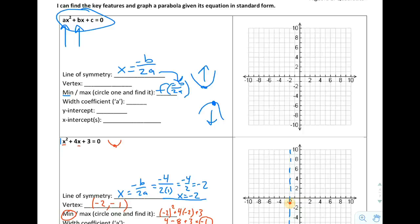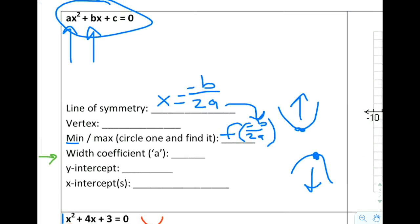Let's continue to identify key features here by jumping down to our width coefficient and then our intercepts. The nice thing about finding the width coefficient when you start with standard form is it is literally just a. Whatever a is, is your width coefficient.